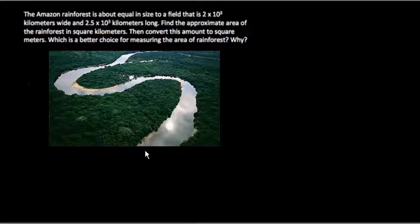Okay, so in this problem we're dealing with a question about the size of the Amazon rainforest. We're told that it's about equal in size to a field that is 2 times 10 to the 3rd kilometers wide and 2.5 times 10 to the 3rd kilometers long. We want to find the approximate area of the rainforest in square kilometers, then convert this amount to square meters and answer which is a better choice for measuring the area of the rainforest and why.